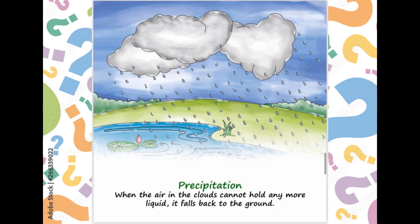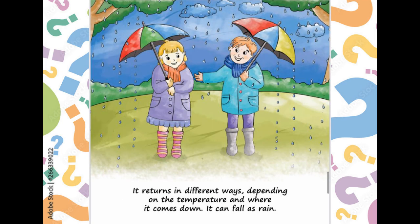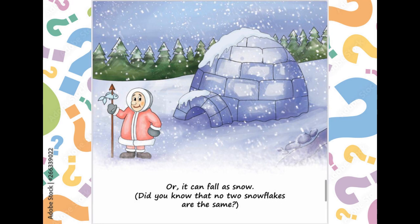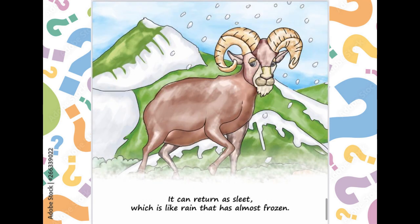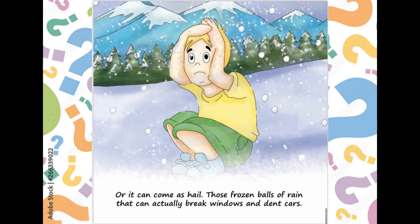Precipitation. When the air in the clouds cannot hold any more liquid, it falls back to the ground. It returns in different ways, depending on the temperature and where it comes from. It can fall as rain, or it can fall as snow. Did you know that no two snowflakes are the same? It can return as sleet, which is like rain that's almost frozen. Or it can come as hail — those frozen balls of rain that can actually break windows and dent cars.